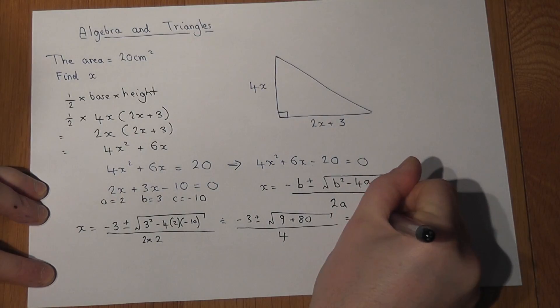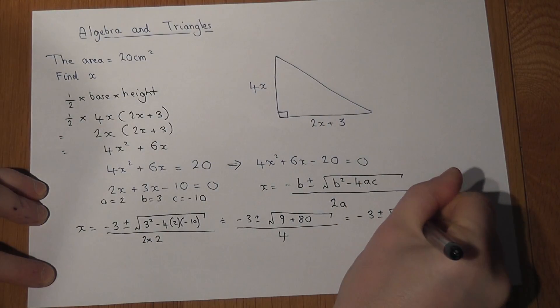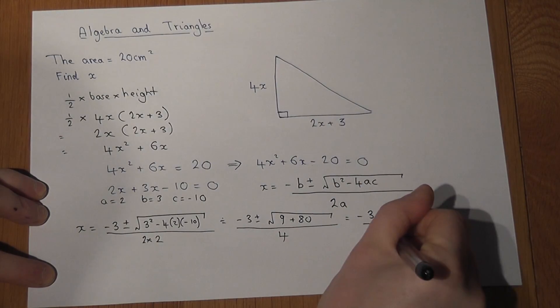So to finish off, and if this was non-calculator, 9 plus 80 is 89, all over 4.